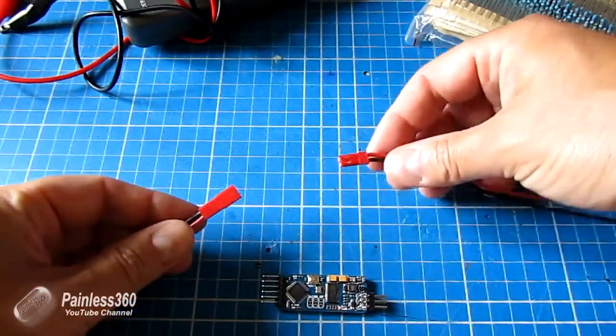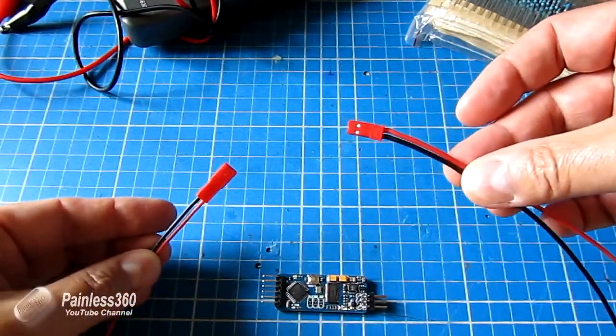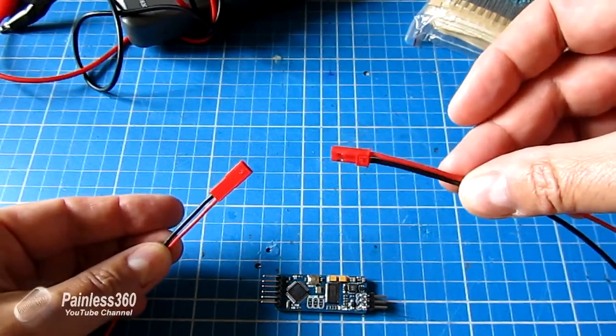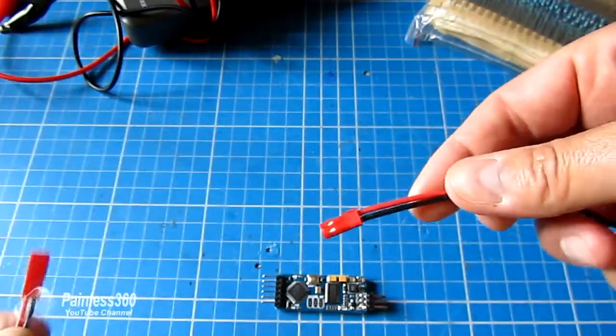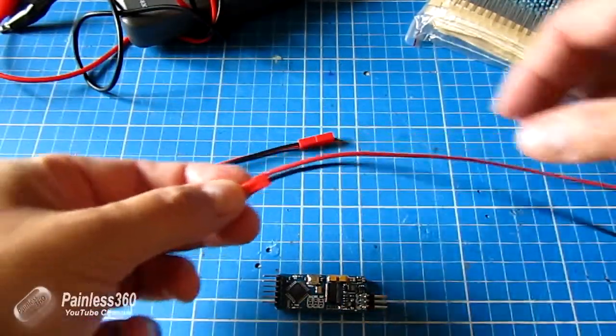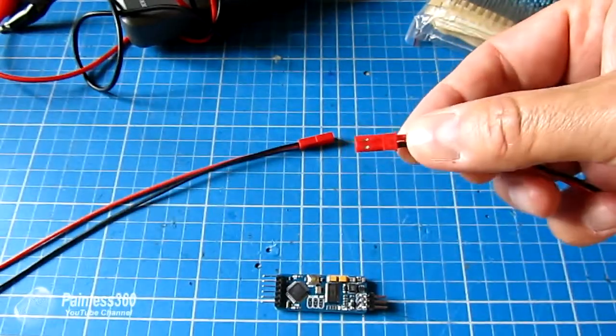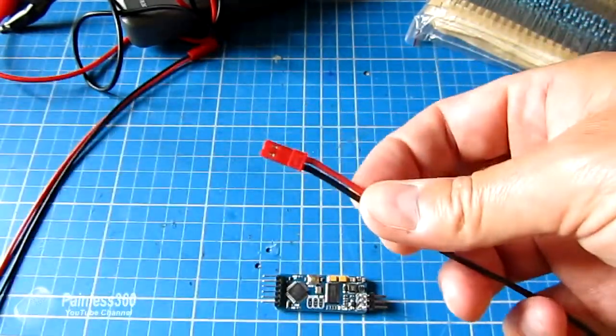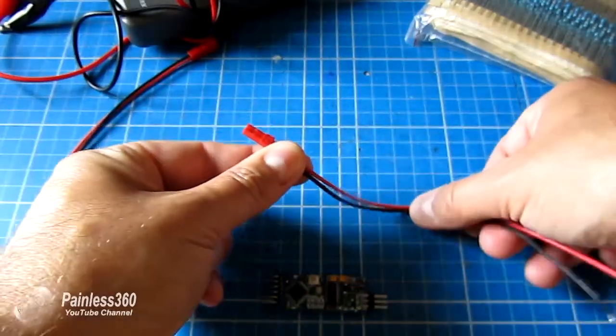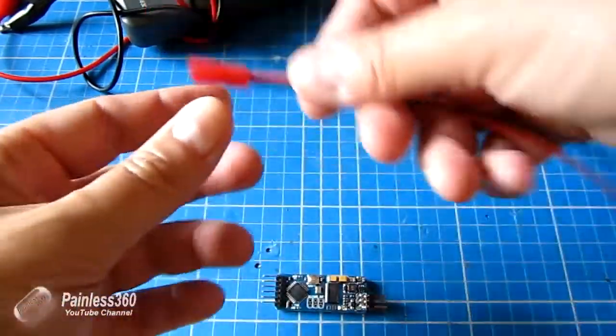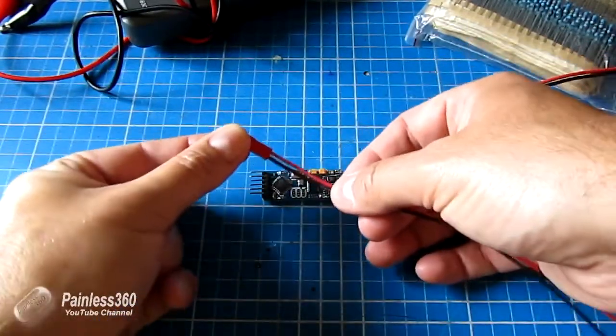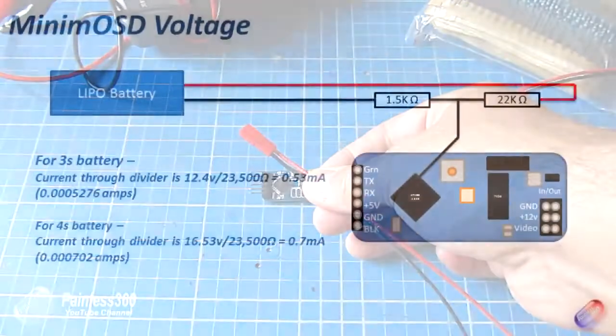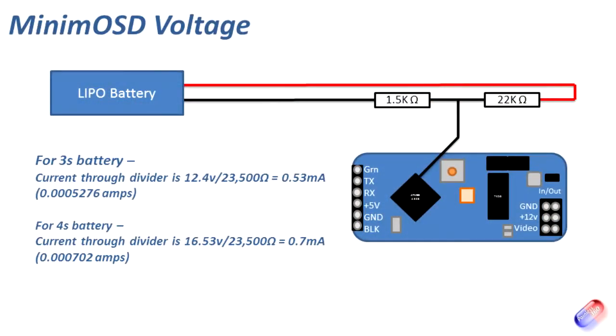And then finally what you're going to need is a couple of these JST connectors. I'd recommend that you always use some kind of connector so you can take the MinimOSD board on and off the machine. What I'm going to do is put this JST lead onto the power distribution board on the quad itself, and then I'm going to use this other lead to connect and make up this little resistor bridge that we have on the screen now. If you've got all that stuff, then you're ready to have a play.